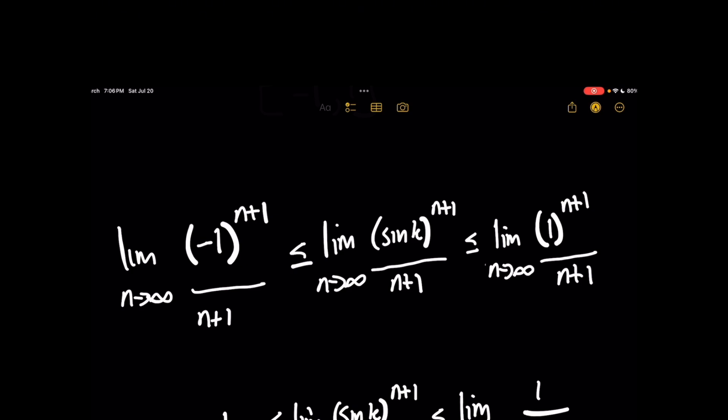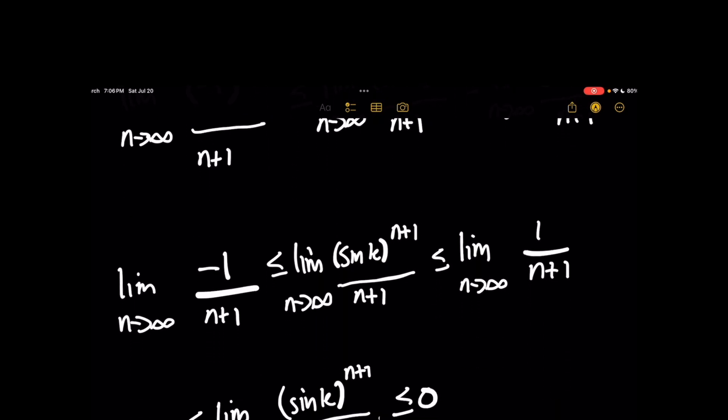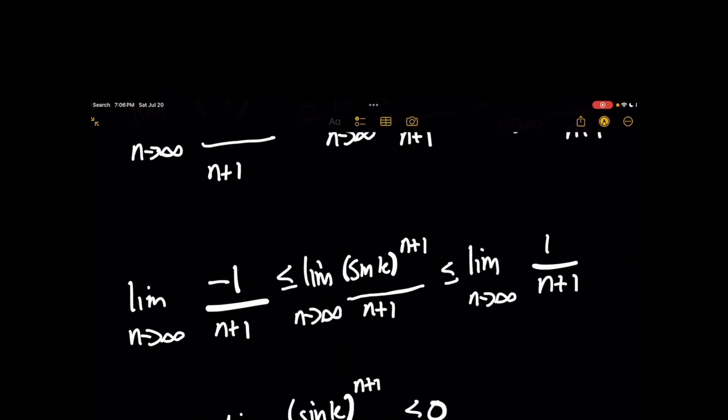Since 1 raised to the n plus 1 is always going to be 1, we can simply drop the powers we're raising negative 1 and 1 to, leaving us with the simpler expression where on the lower bound we have the limit as n approaches infinity of negative 1 over n plus 1.